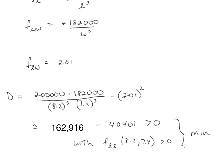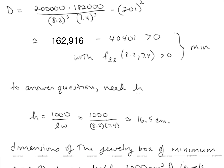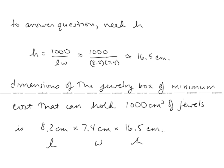Now that we've solved the problem, we go back and check our work, then answer in the language of the original problem. The problem asked for the dimensions — length, width, and height. H equals 1,000 over LW, which gives approximately 16.5 centimeters. The dimensions of the jewelry box of minimum cost that can hold 1,000 cubic centimeters of jewels are 8.2 cm by 7.4 cm by 16.5 cm, representing length, width, and height. With this we conclude our lesson on optimization.